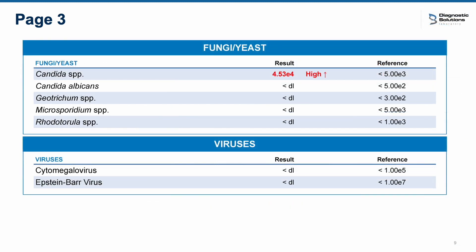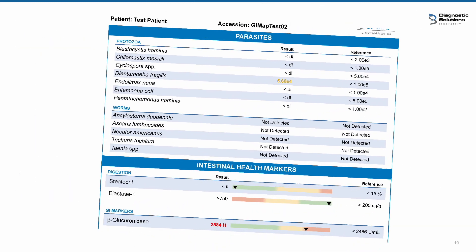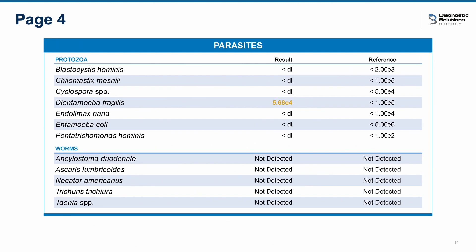There have been no changes to the fungi and yeast or cytomegalovirus and Epstein-Barr virus reported on page three. Moving on to page four: little changes have been made to the non-pathogenic parasites, protozoa, and worms, but detected levels that are below reference range are now flagged yellow as opposed to black, to highlight the potential clinical relevance of low levels of these microorganisms.